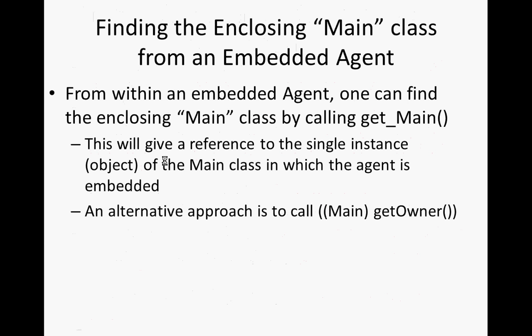You'll see a variant of this later this week. Right now people are embedded in the main class, embedded in a population that lives in main, so you call get main. If they live in a city and the city lives in main, and you want to ask about the enclosing city, you call get-underbar-city to get a reference to the city.